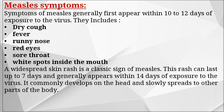Symptoms of measles generally first appear within 10 to 12 days of exposure to the virus. They include dry cough, fever, runny nose, red eyes, sore throat, and white spots inside the mouth. A widespread skin rash is a classic sign of measles. This rash can last up to 7 days and generally appears within 14 days of exposure to the virus.